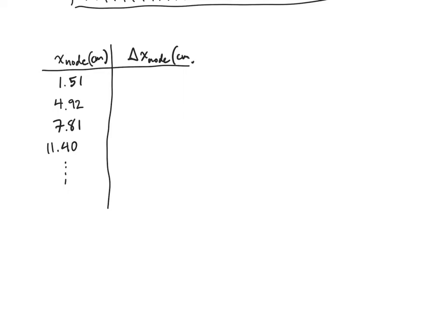Since there was no node previous to that one, I'll just leave that blank. This one becomes 3.41, that's the distance from that node to the previous one. The next one becomes 2.89 and this one becomes 3.59, and then we just do that for all the nodes that we found using this method.